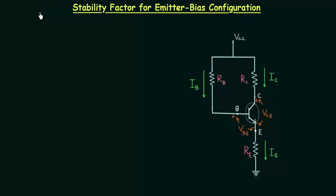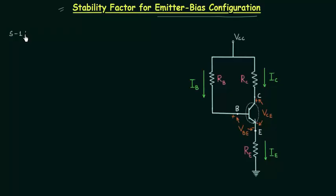In the last lecture we calculated stability factors for fixed bias configuration. In this lecture we will obtain stability factors for emitter bias configuration. This is the emitter bias circuit, and in step number one we will apply Kirchhoff's voltage law in the input loop to obtain the base current IB.